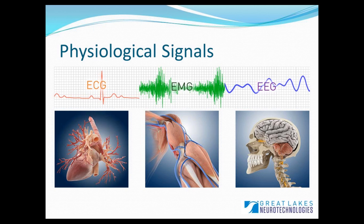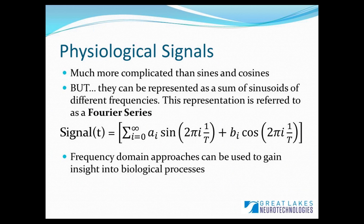We've been discussing things in terms of sines and cosines, but physiological signals are usually much more complex than that. Luckily, they can still be represented as a sum of sinusoids of different frequencies. This representation is referred to as a Fourier series, and basically what this means is that any generic signal can be represented as a weighted sum of sines and cosines. Using Fourier series representation, we can decompose any signal into sines and cosines and then use the concepts that we've been discussing so far to analyze signals. In the frequency domain, these approaches are particularly useful to gain insight into biological processes.